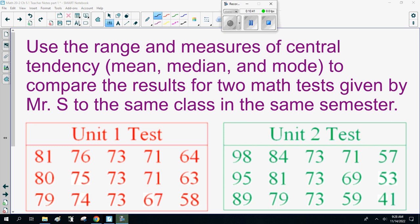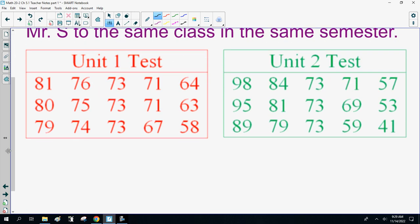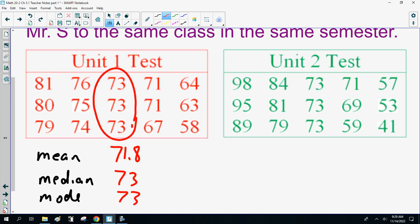Last question. I'm going to stop here. We'll do one more question, then hit the key idea. Use the range and measures of central tendency mean, median, mode to compare the results for two math tests given by measure S to the same class in the same semester. Unit one test versus unit two test. So, I need the mean, median, and mode. I'll do the unit one test. When I added all these numbers up, I got a mean of 71.8. The median was 73 and the mode was 73. Notice all these 73s here. I'm going to pause the recording. I want you guys to do the mean, median, mode for the unit two test. We'll compare results.